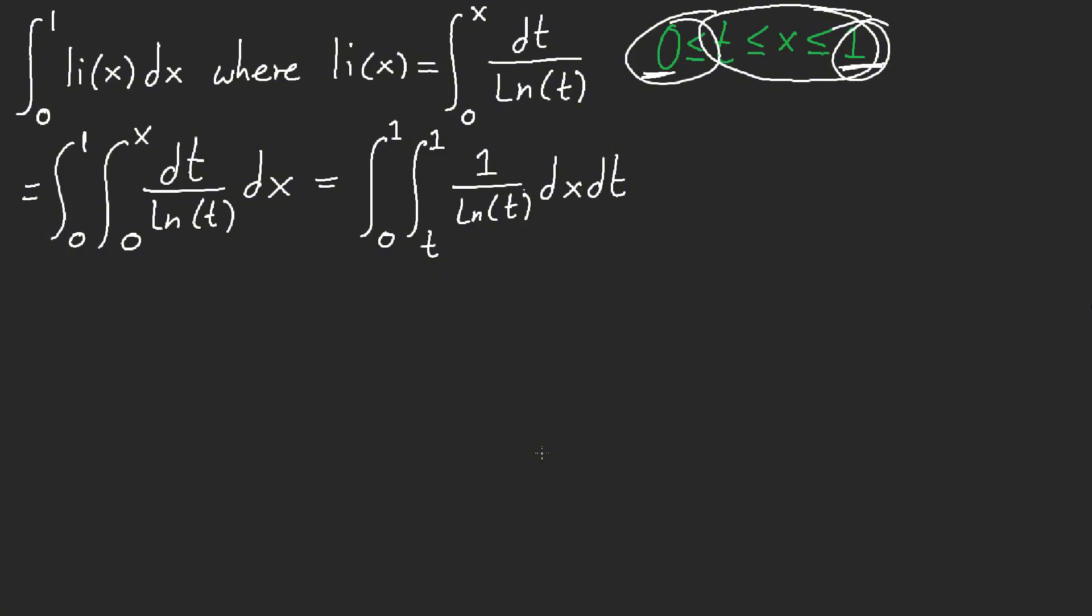So, now we can just legally compute the integral. This is easy. We're starting with dx. It's just a constant. So, this is easily from 0 to 1, 1 minus t over ln(t) dt.